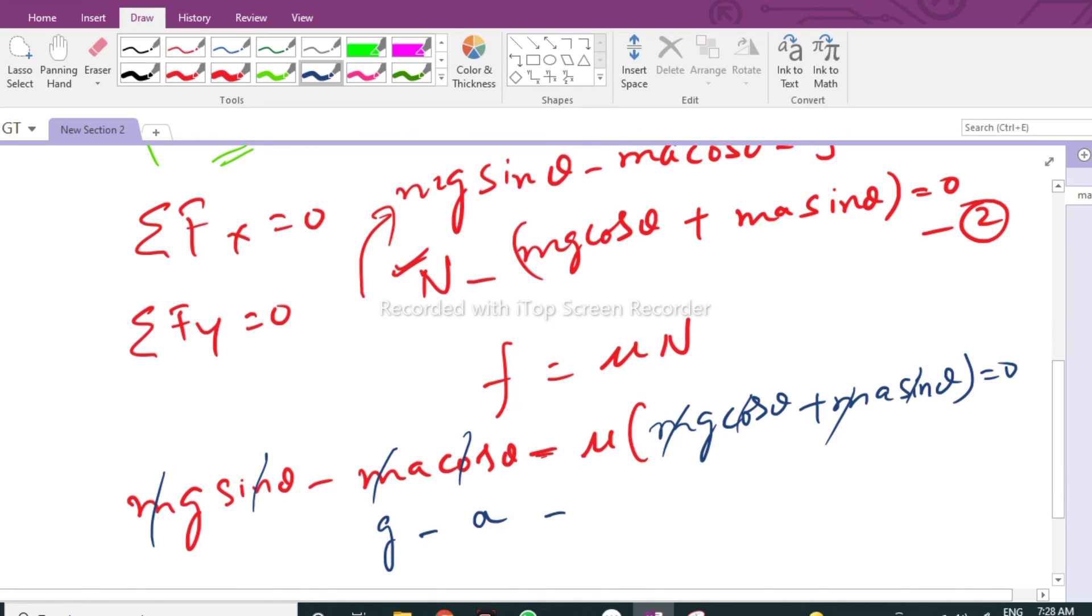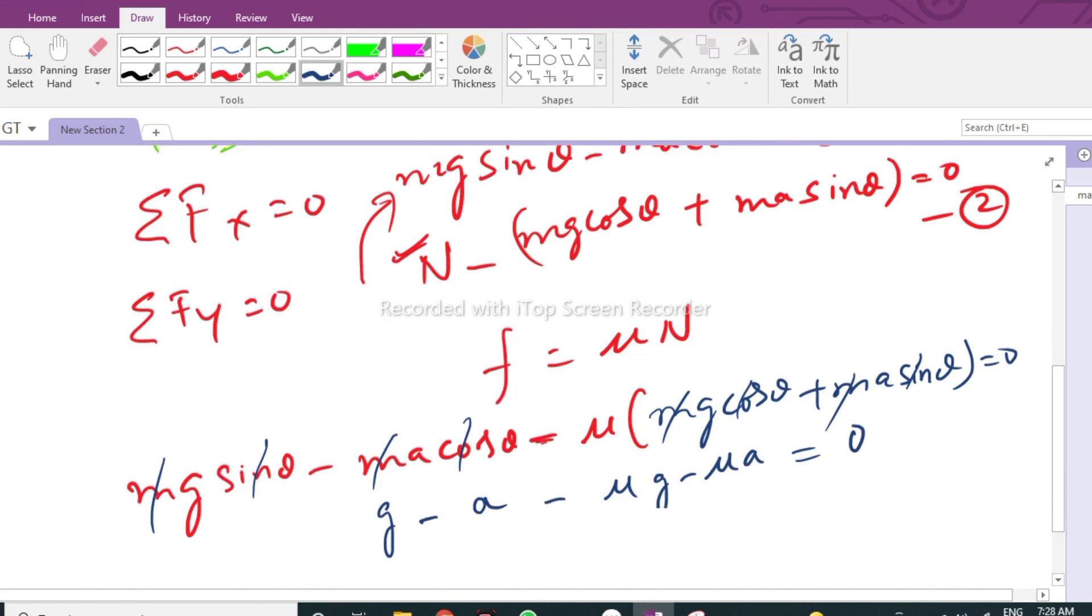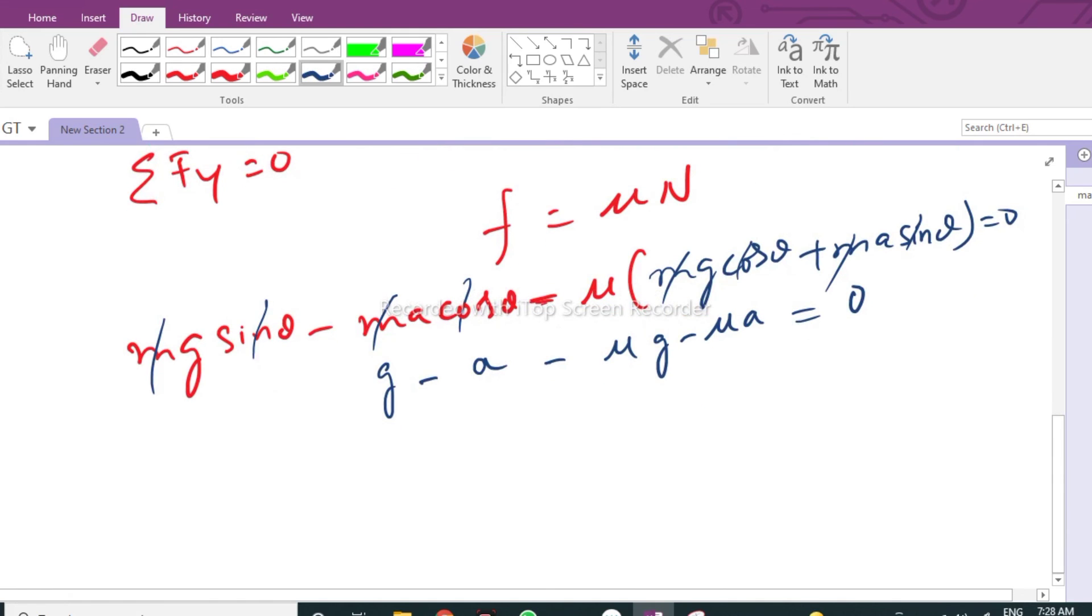Finally, you are left with g minus a minus mu times g minus mu times a equals zero. We are finding out the value of a.